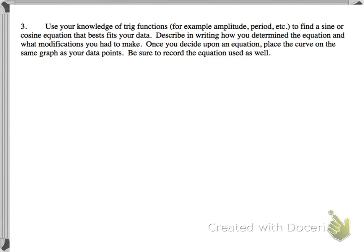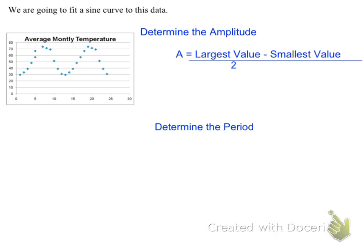So now we're going to talk about step 3 in our Essential Standard, and basically what we're going to do right now is we are going to take that data that we have, and we're going to find a sine or cosine graph to fit the data. Now, in order to do that, we're going to need to find the amplitude, the period, the shift, and all the other information.